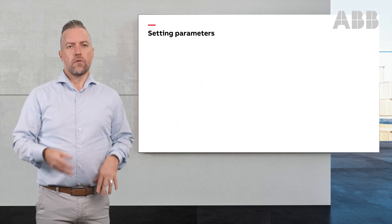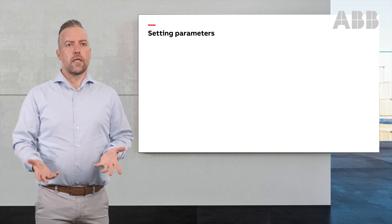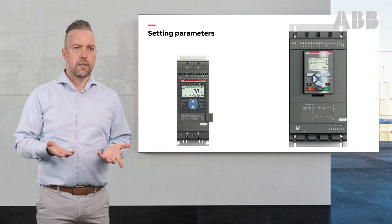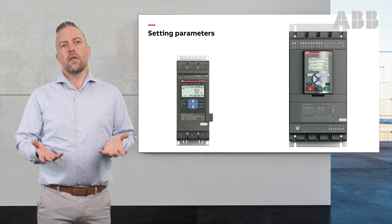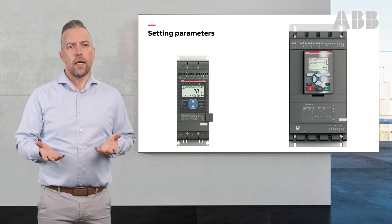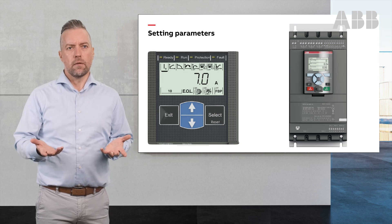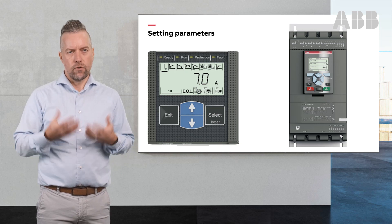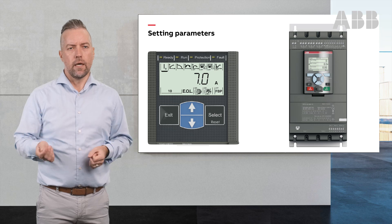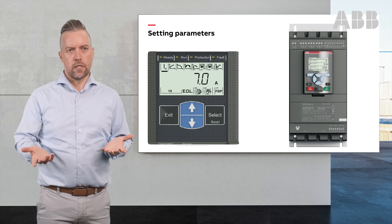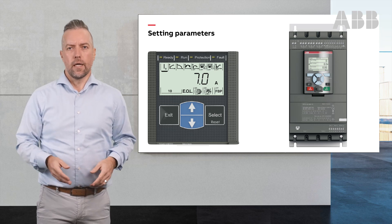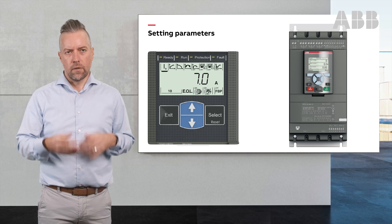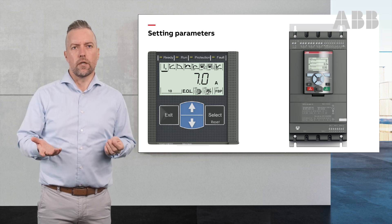You have two soft starters you can set it on: the PSE and the PSTX. If you look at the PSE, you can see it in the menu in the HMI directly on the front screen — the IE. You just push select, go in, and change that value to whatever motor rated current you have.